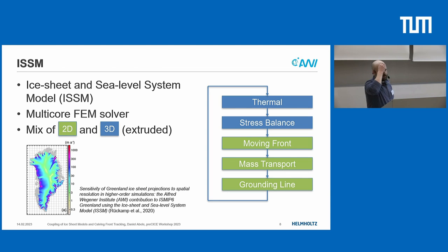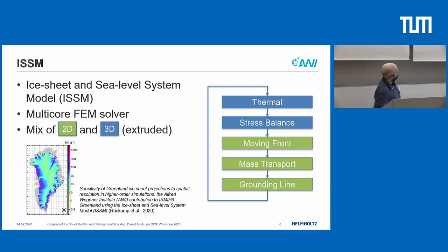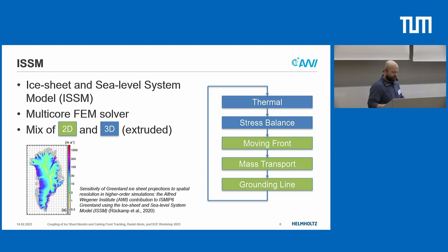The ice sheet simulation software ISSM is quite a complex system. It has to solve multiple problems in so-called cores. We have a thermal core which does temperatures, a stress balance core which handles stresses in the ice and velocity, and we also have a moving front core which does front tracking. But we want to replace this with our own external code for reasons I will get to.